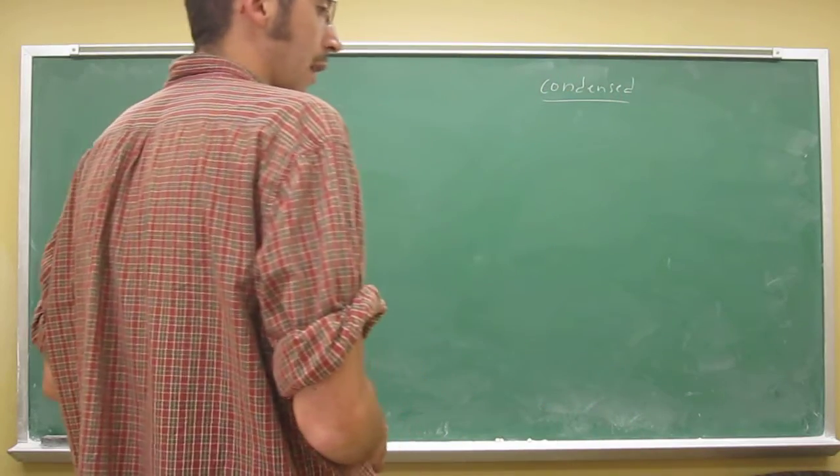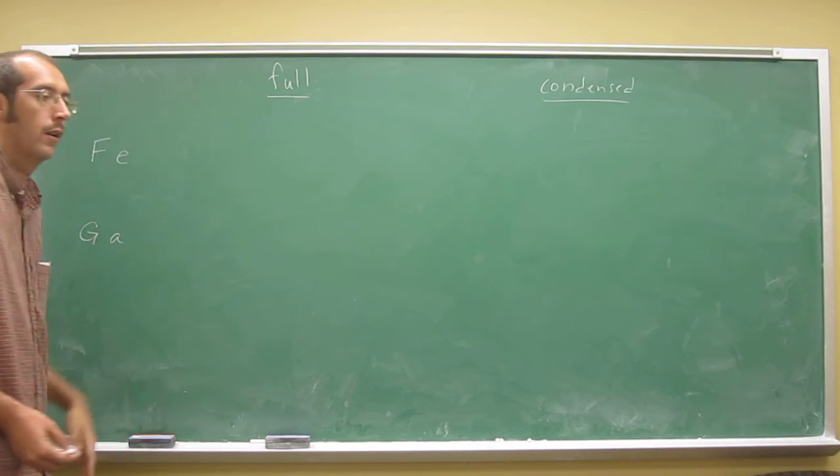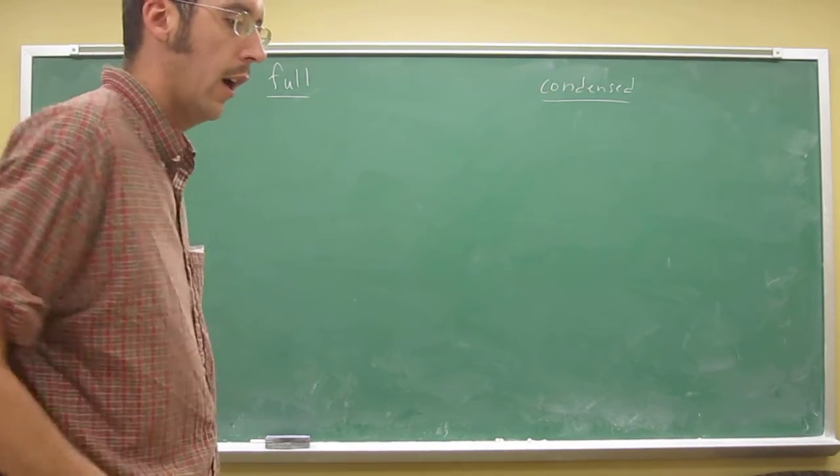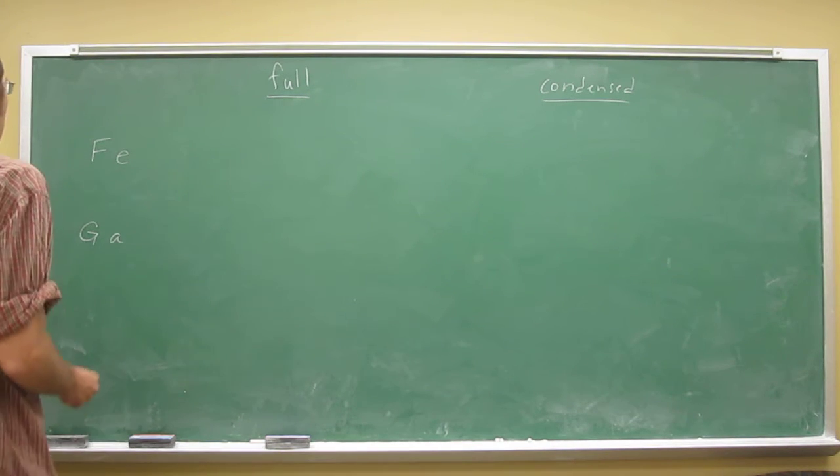But anyway, so the first one here is iron. This is another good one to memorize if you don't know. The second one is gallium, but it's actually in the 4p, so it's n equals 4, but we'll talk about that in a second. Anyways, so let's just draw the full electron configuration of iron.